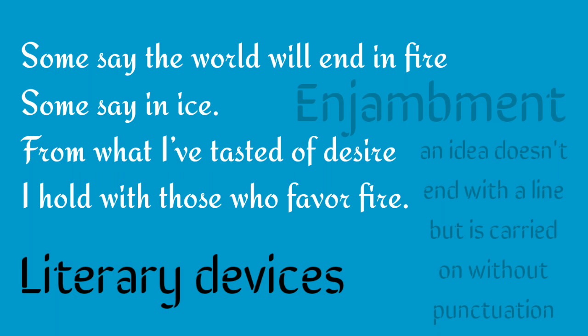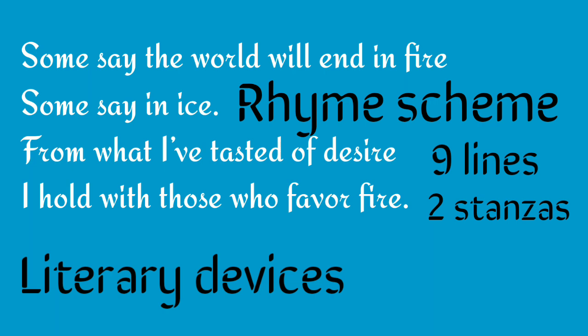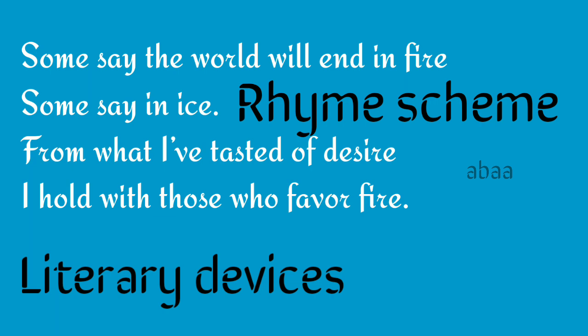The poem is basically nine lines divided into two unequal stanzas, and the rhyme scheme is not uniform. In the first stanza there are four lines and in the second stanza there are five lines. The rhyme scheme for the first stanza is A-B-A-A.